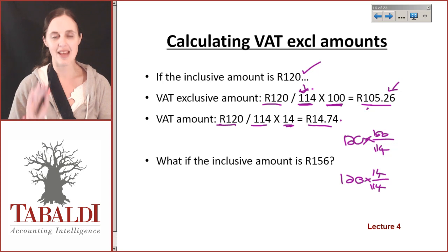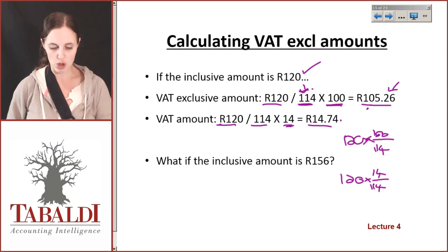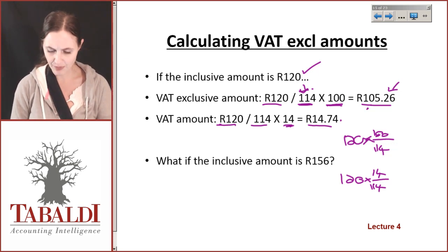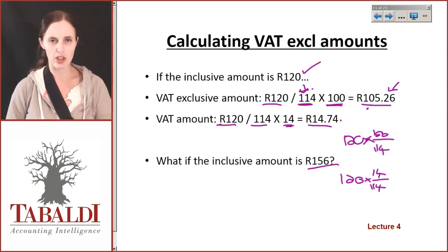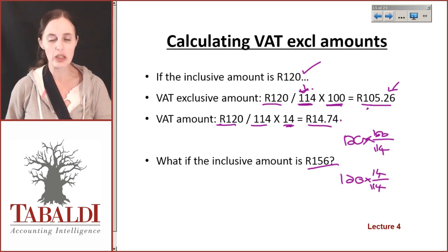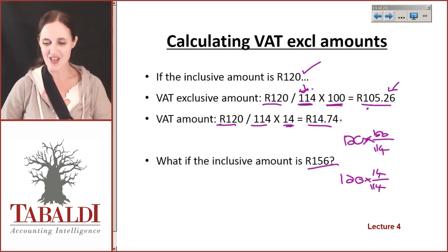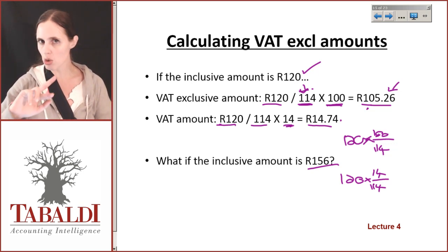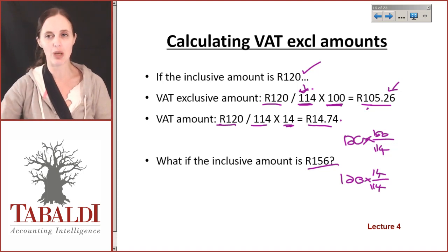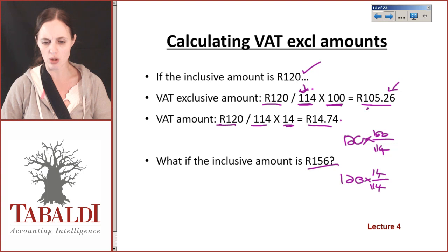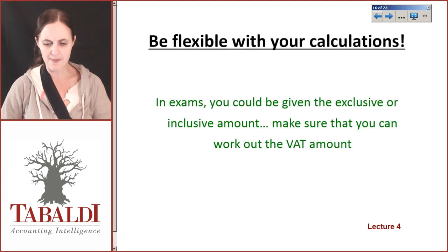Now go and calculate the VAT exclusive amount if the inclusive amount is 156. Make sure that you can always prove it — check it back and forward by multiplying your exclusive amount by 14%. Make sure that you can always prove that.